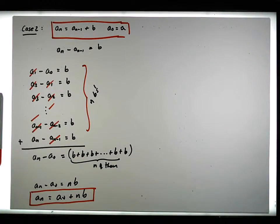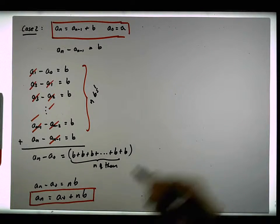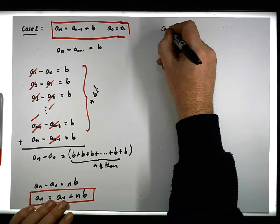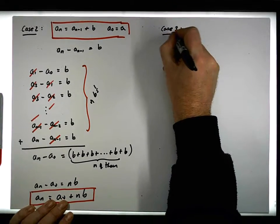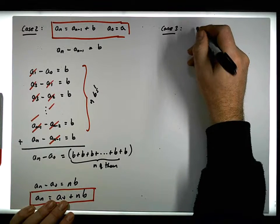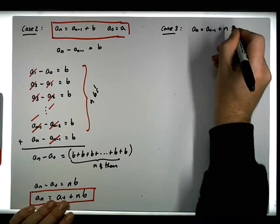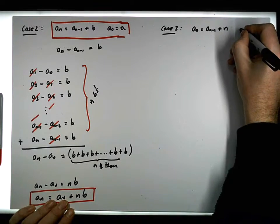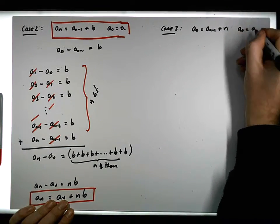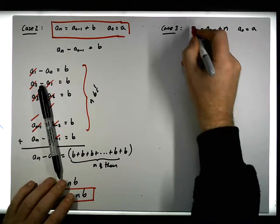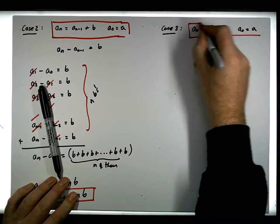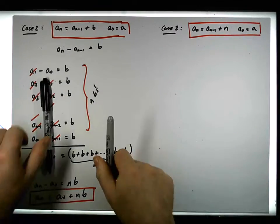Let's have a look at case 3. So case 3, a little bit more complicated. Case 3 is defined: a_n is equal to a_{n-1} plus n, and we'll maybe have a_0 is equal to a constant a. So what we want to do is find a closed form solution to a recurrence that looks something like this.